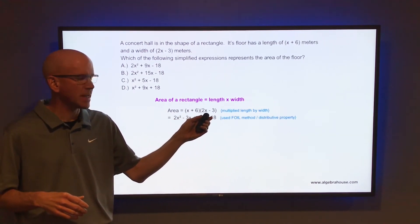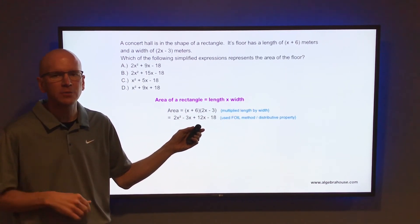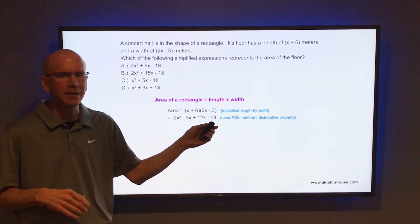Then distribute the 6 through that second set of parentheses. Take 6 times 2x, the inner terms of the FOIL method, that is 12x. And 6 times negative 3, the last terms of the FOIL method, that is negative 18.